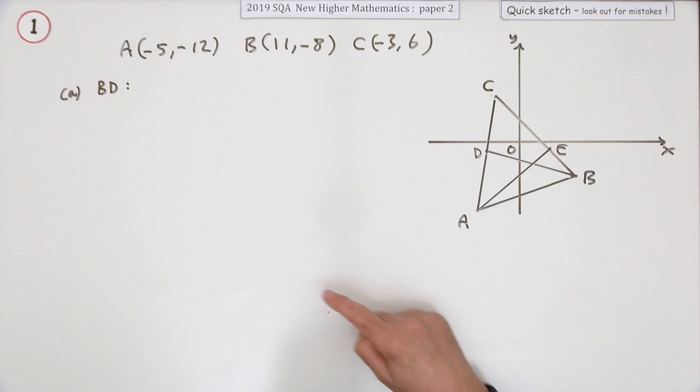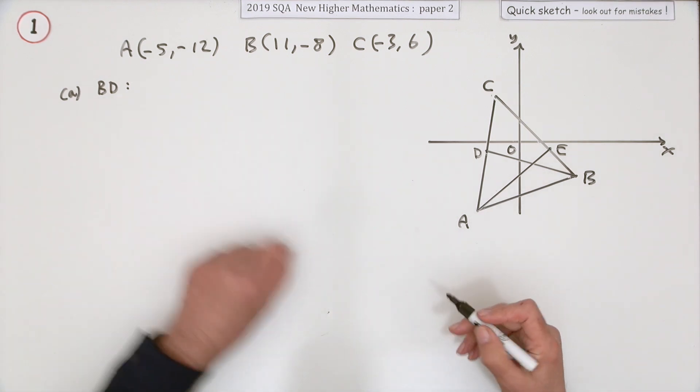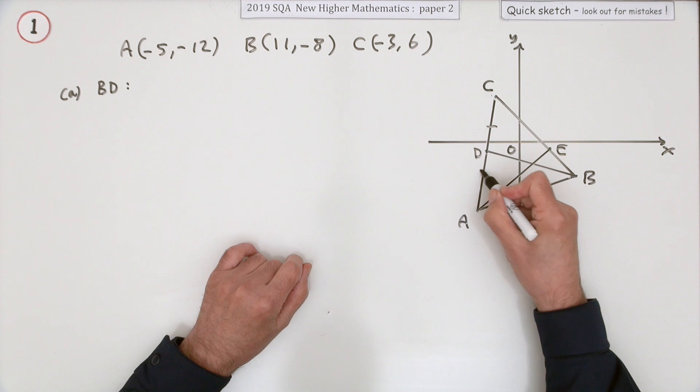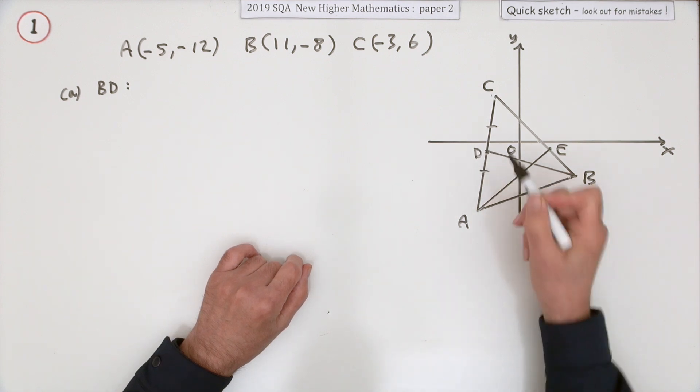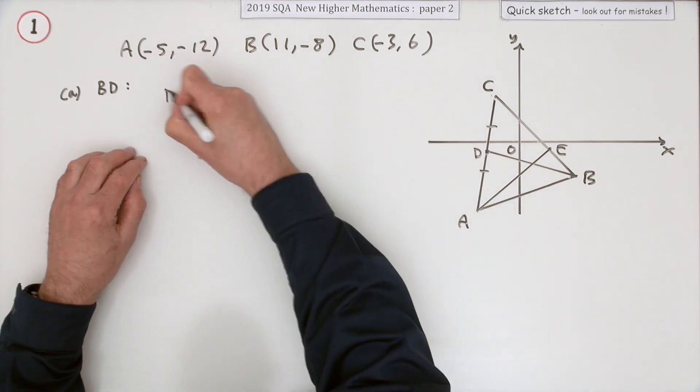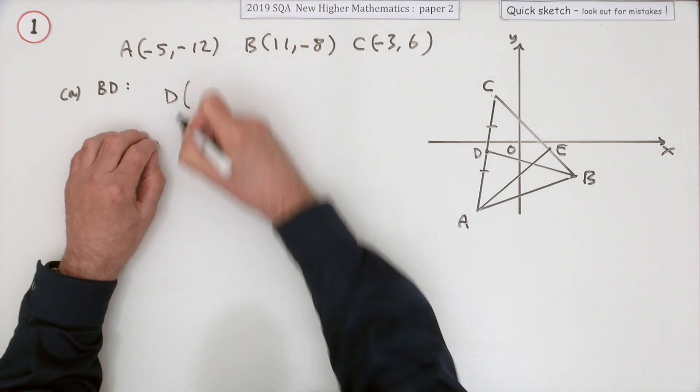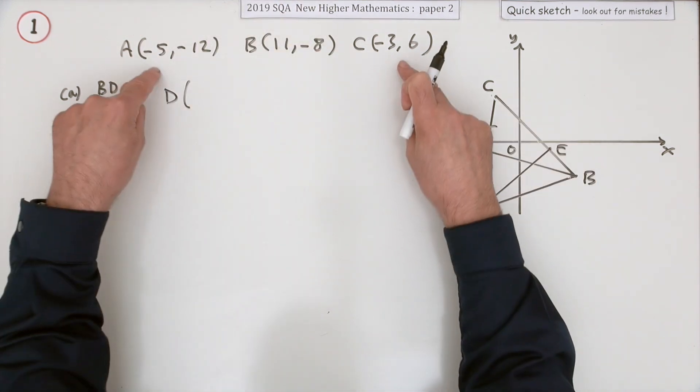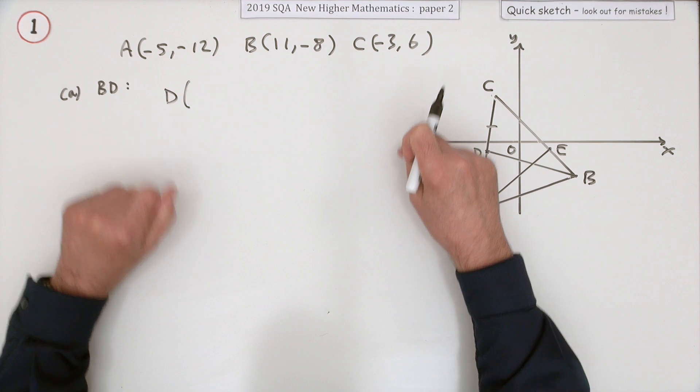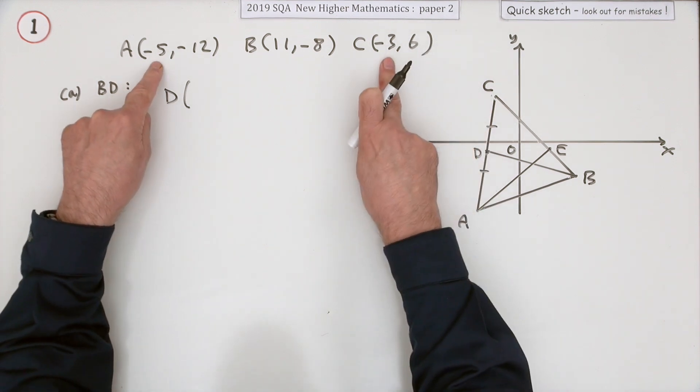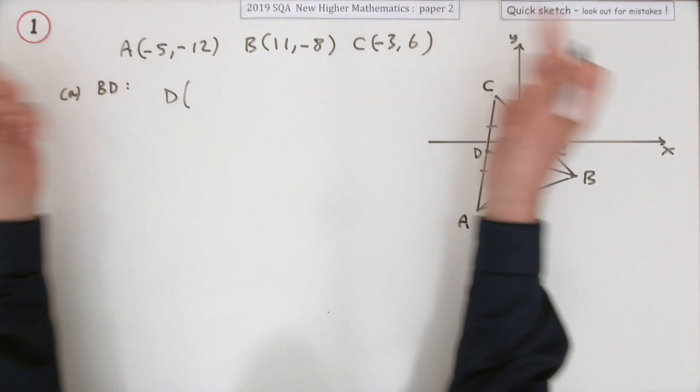Part a, find the equation of the median BD. It tells you it's a median so it must go to the midpoint, so you can find the coordinates of this point D. D will be halfway between A and C. Halfway between -5 and -3 is -4.